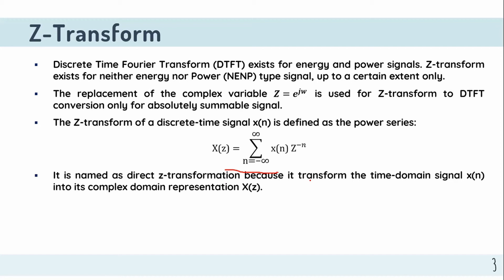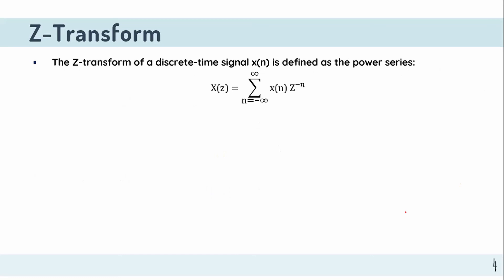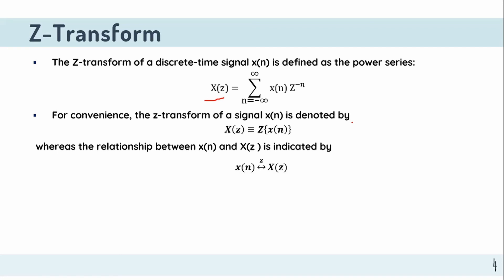We perform the direct Z-transform on the time-domain signal x of n to get the complex domain representation x of z. We can also convert x of z back using the inverse Z-transform to recover x of n. When we have x of n and apply the Z-transform, we obtain x of z.